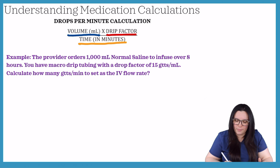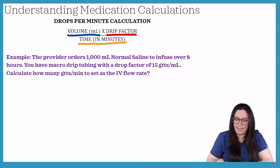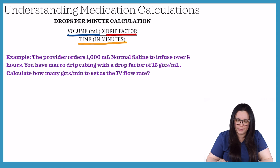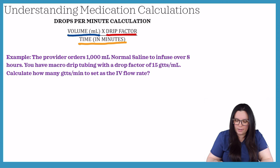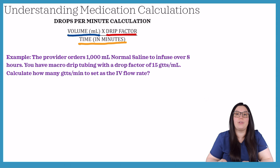The first example: the provider orders 1000 mL normal saline to infuse over eight hours. You have a macrodrip tubing with a drop factor of 15 drops per mL. Calculate how many drops per minute to set as the IV flow rate.